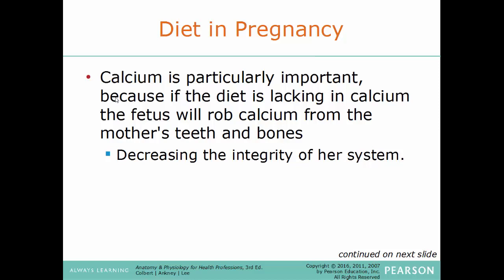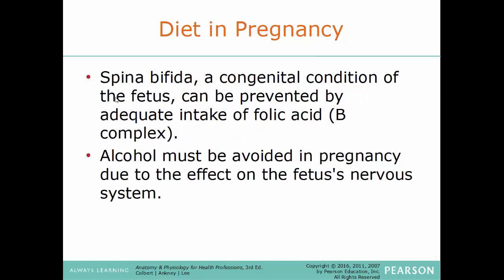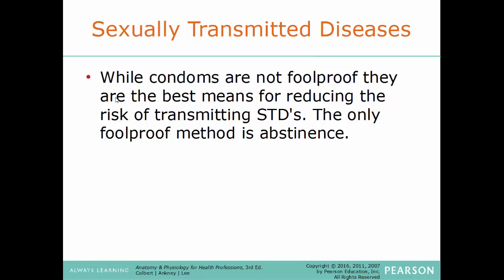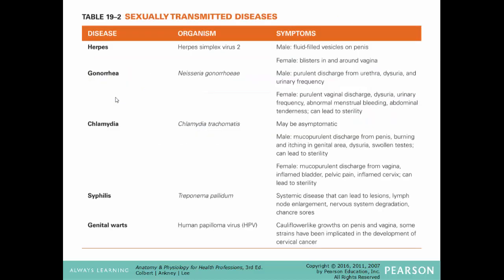Reproductive system wellness: smoking mothers tend to have low birth weight infants, an increased tendency toward premature birth, and a higher rate of SIDS (Sudden Infant Death Syndrome). Secondhand smoke in the home leads to slower lung development in children. Spina bifida is a congenital condition of the fetus that can be prevented by adequate intake of folic acid or B-complex vitamins. Alcohol must be avoided during pregnancy due to its effect on the fetus's nervous system. Sexually transmitted diseases (STDs) are a growing problem and can have serious and lethal effects on the reproductive system. There are various diseases and organisms transmitted through unprotected sex, including oral sex. While condoms are not foolproof, they are the best means of reducing the risk of STD transmission; the only foolproof method to prevent their spread is abstinence.